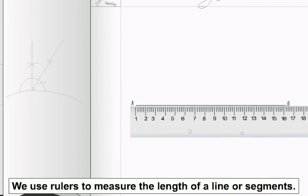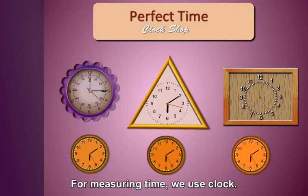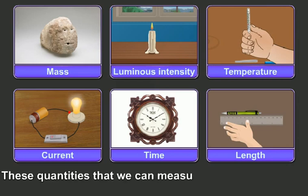you use a ruler to measure the length of a line or a segment. Similarly, for measuring time, we use a clock, isn't it? Students, these quantities that we can measure are called physical quantities.